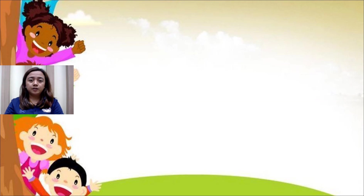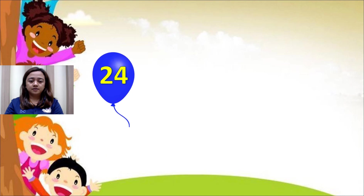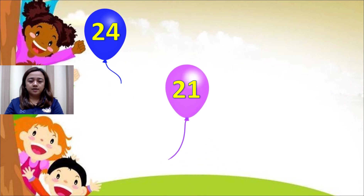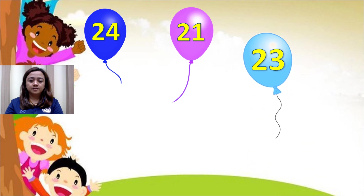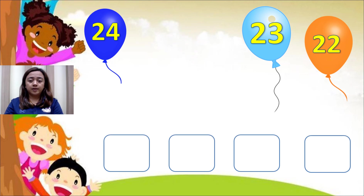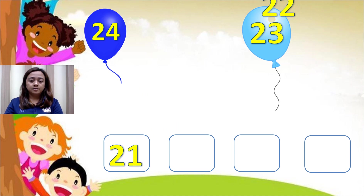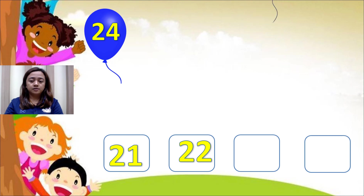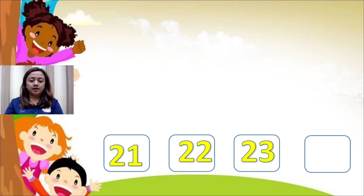Here is an example of ascending order. We have 24, 21, 23, and 22, and we are going to arrange them from smallest to largest. So the order is 21, 22, 23, 24.